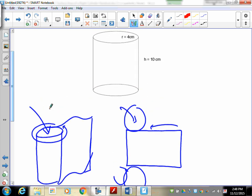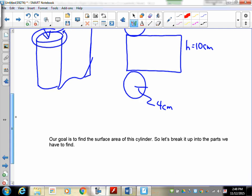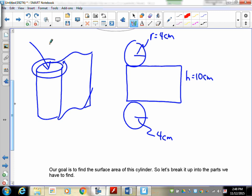Now, in our particular one, we've got a couple of things I've got to add here. We know our radius is 4 centimeters. We know that our height, right here, is equal to 10 centimeters. And we know that the bottom also has a radius of 4 centimeters. So, our goal is to find the surface area of the cylinder. So, breaking it up into its parts makes it a little bit easier to work with.